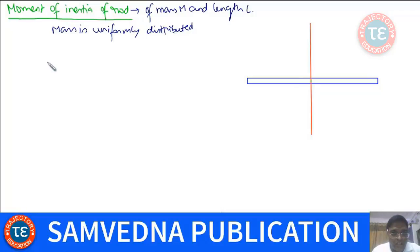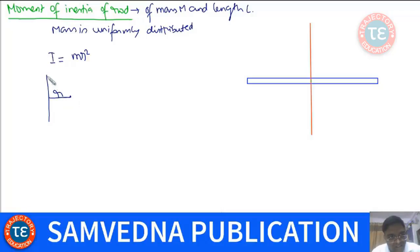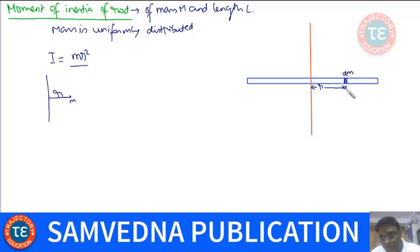The moment of inertia of any point mass about a given axis is given by MR². If this is the axis and this is the point mass at distance R, then the moment of inertia is MR². We can assume this rod to be made up of elements — say this element is having mass dm, lying at a distance R, and the thickness is dR.